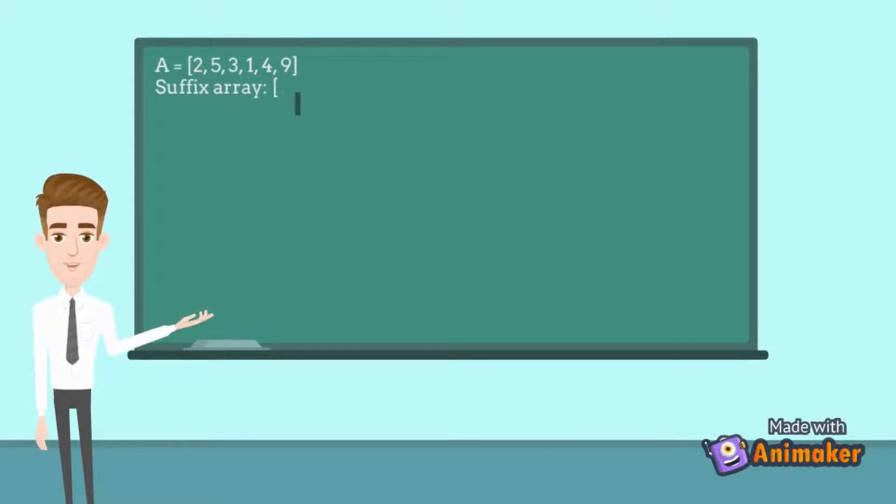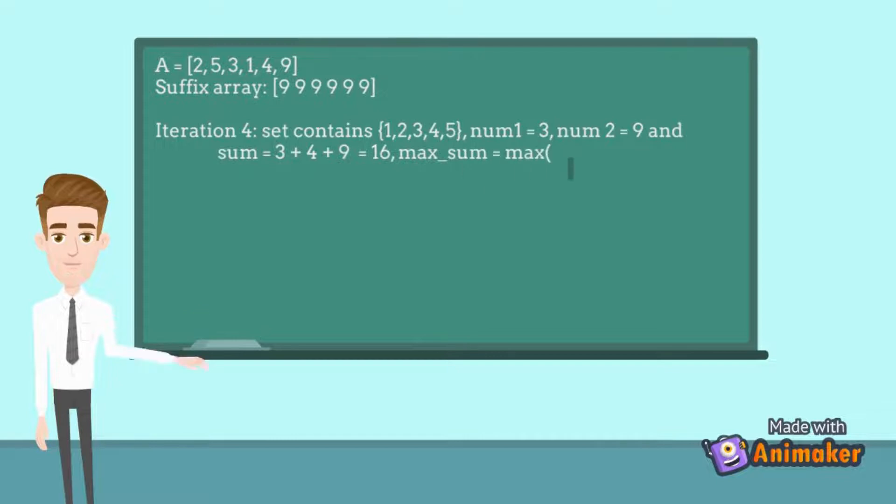For iteration 4, we get the sum as 3 + 4 + 9 which equals 16. The max sum variable will contain the maximum value of sum, that is equal to 16.